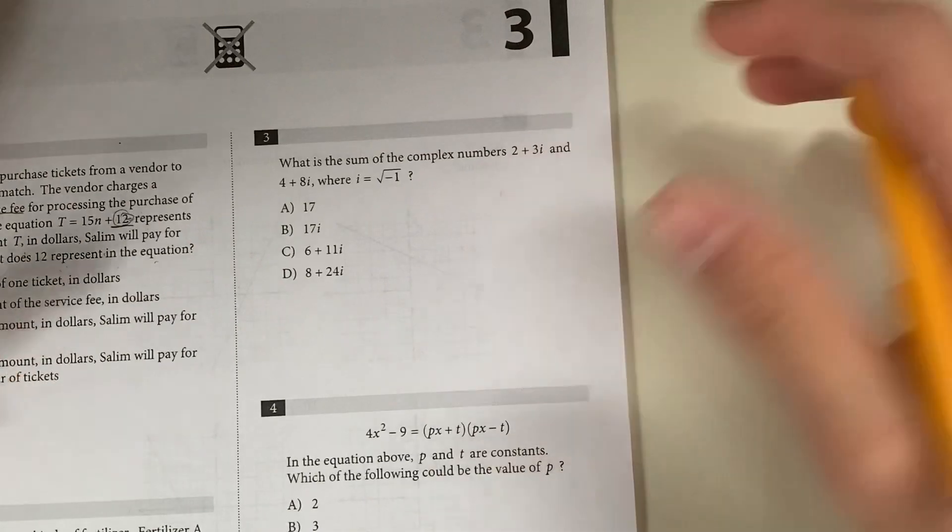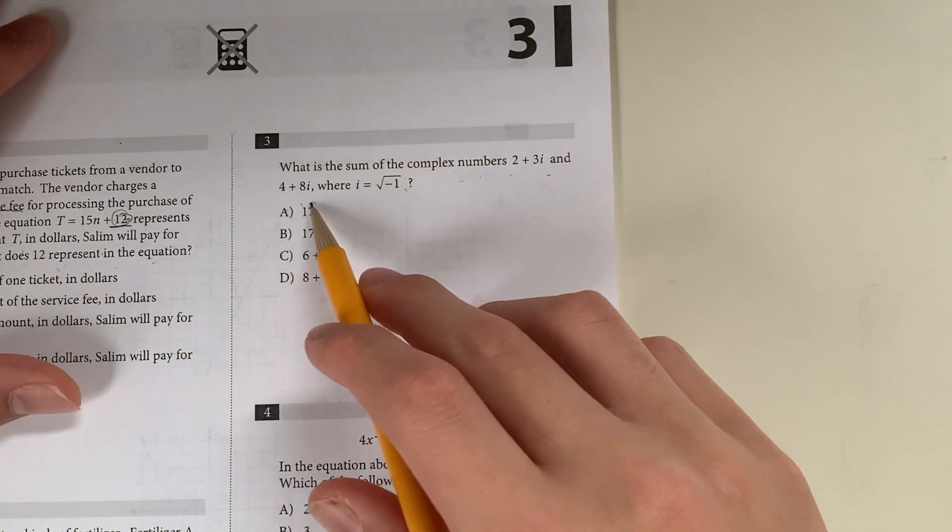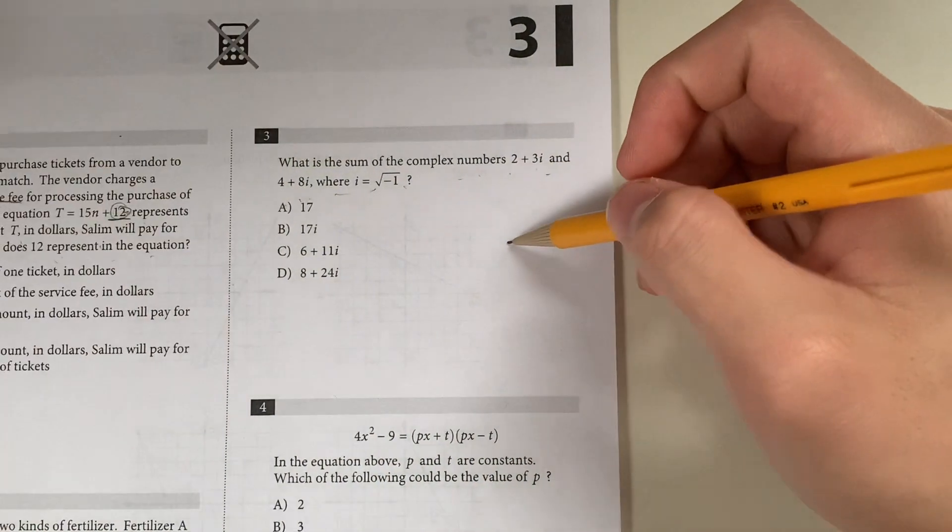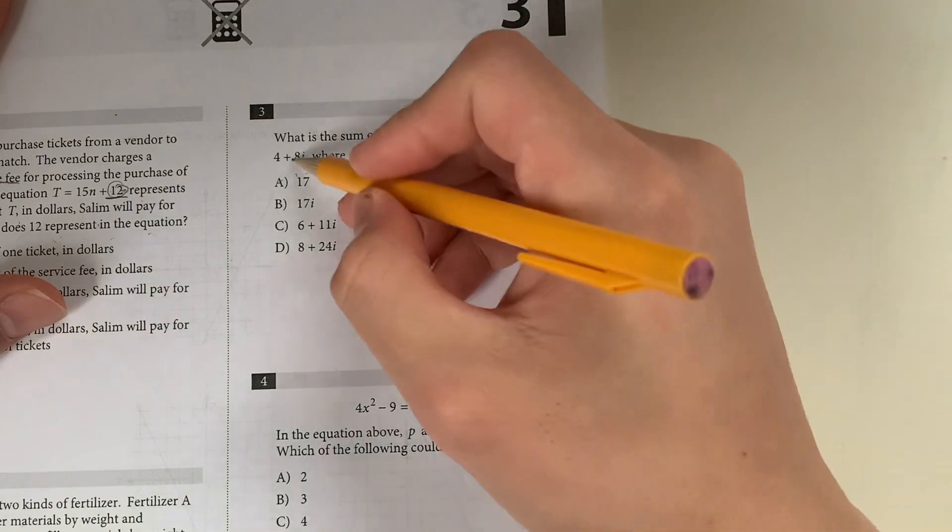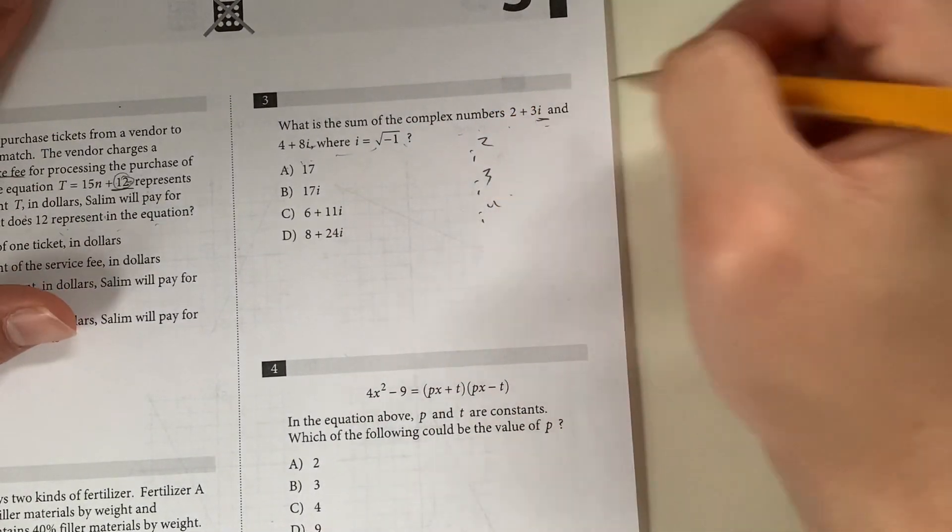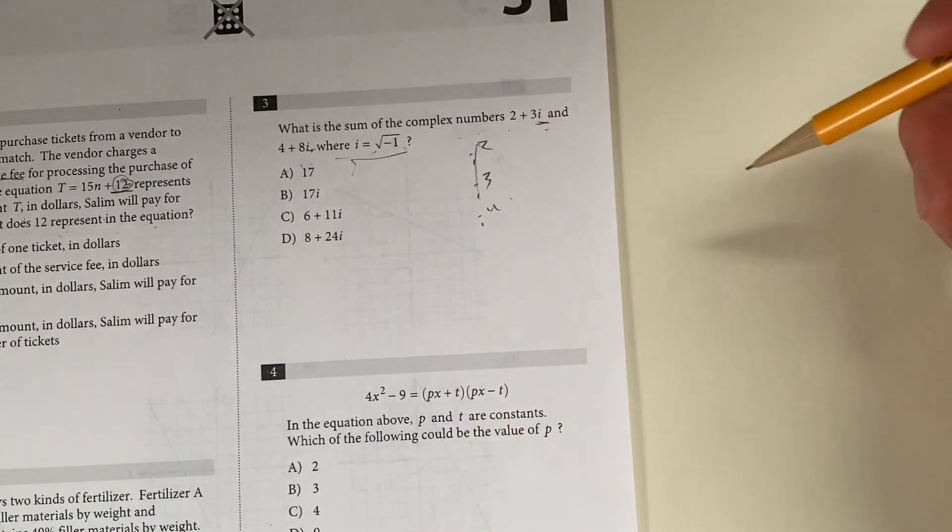Question 3. What is the sum of the complex numbers 2 plus 3i and 4 plus 8i, where i equals the square root of negative 1? Dealing with imaginary numbers isn't too difficult as long as they're just i's.